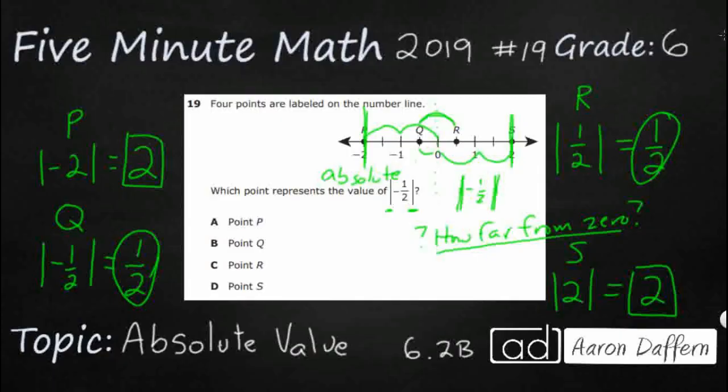Now that we know the absolute value of each of these points, let's see what the problem is asking. Which point represents the value of negative one-half? This is where it gets interesting, because look at this negative one-half. This negative one-half is actually right there, point Q, right?